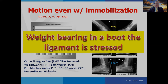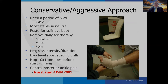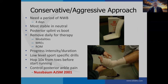In our 2001 article, we detailed a conservative aggressive approach using a posterior splint rather than a boot, with non-weight bearing for four days — at four days, athletes typically said they could start bearing some weight and doing more functional activity. You gradually progress rehabilitation intensity and duration. When they can do 10 hops from their toes, they can start running. Posterior ankle pain is an indication they're doing too much activity — back off and get it under control, otherwise it will limit return.